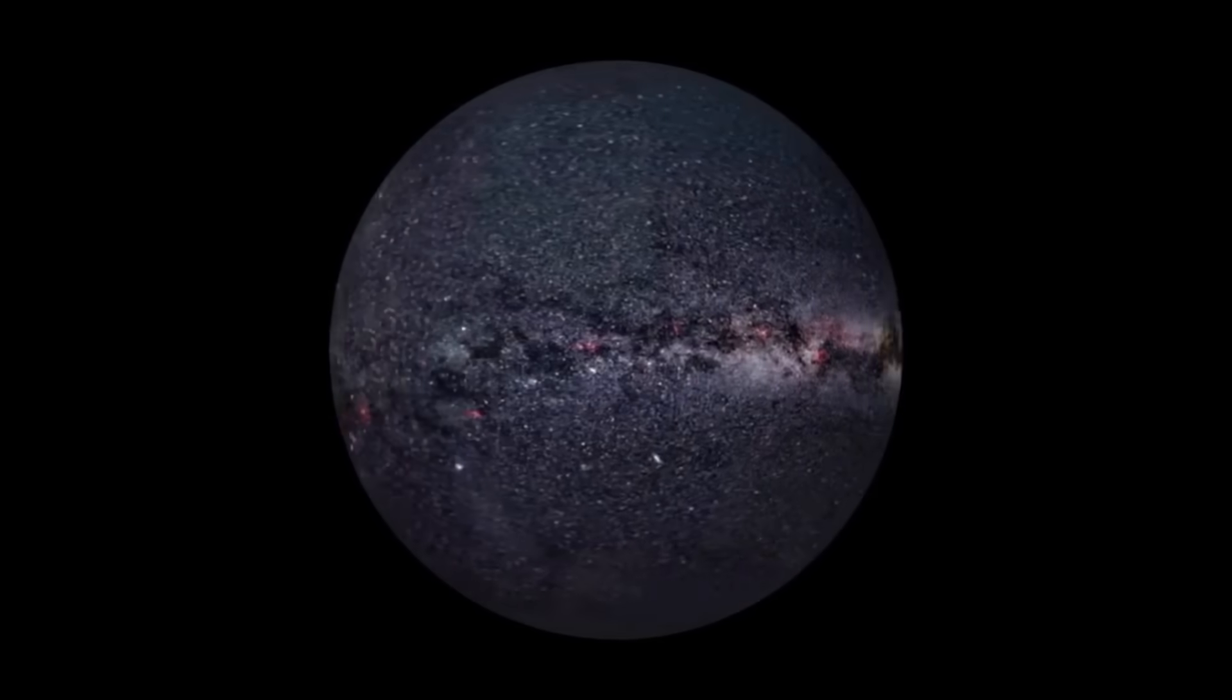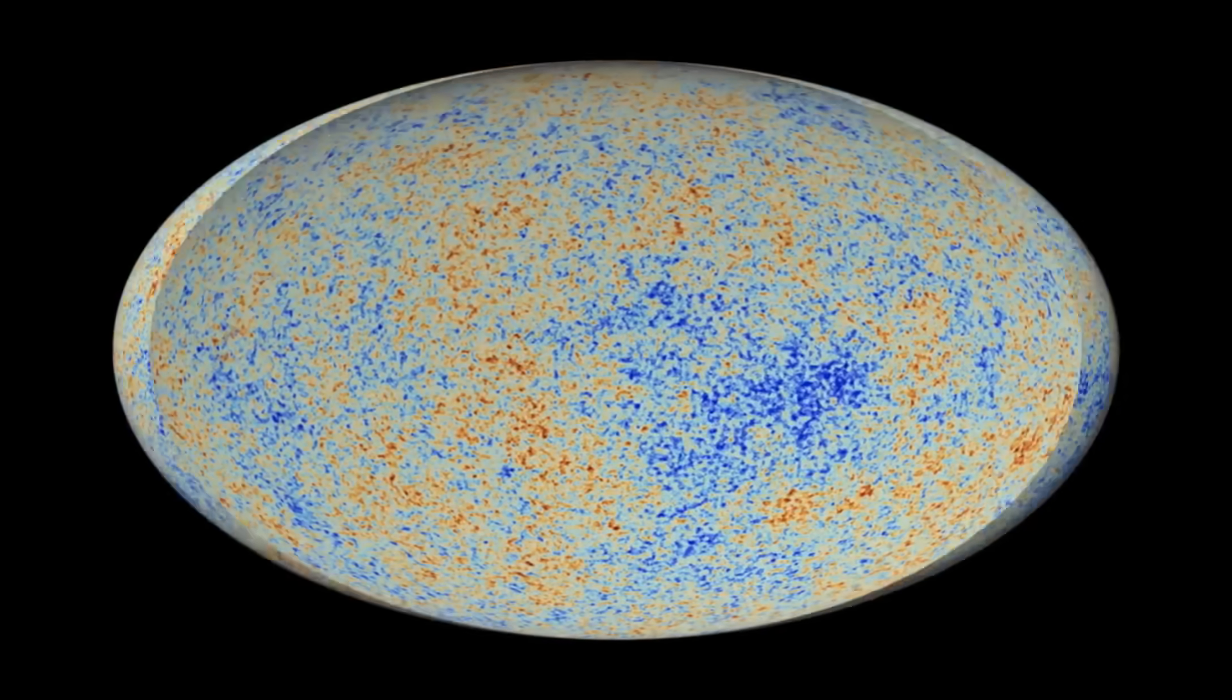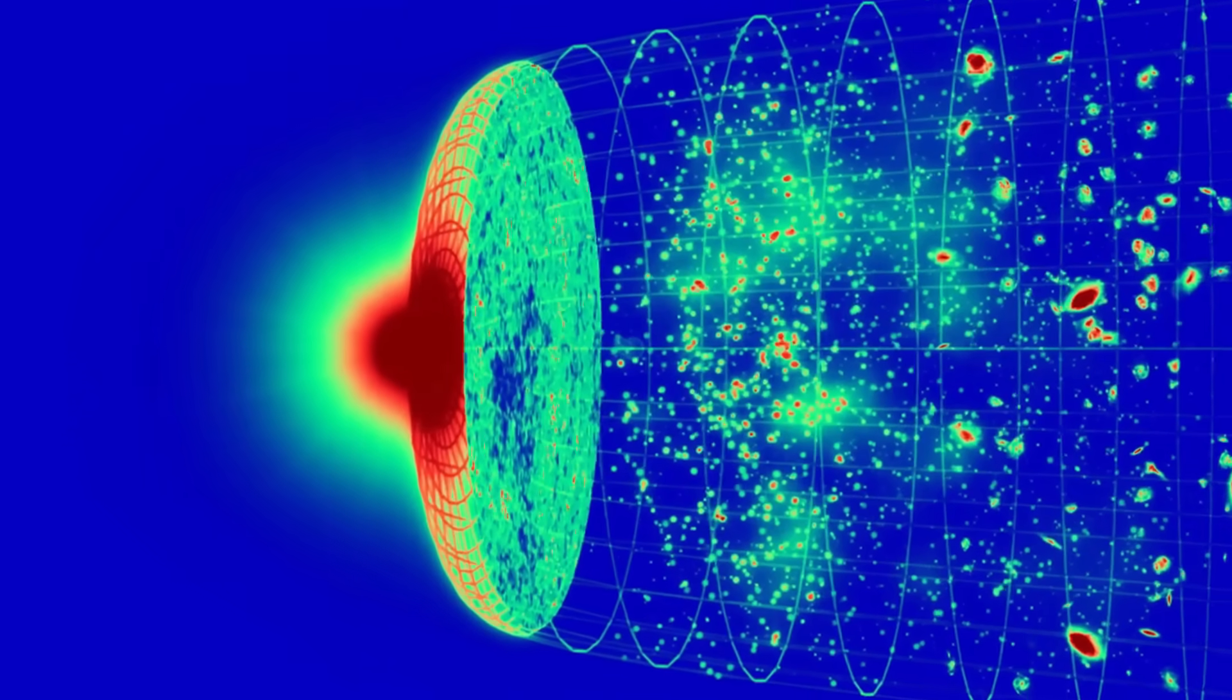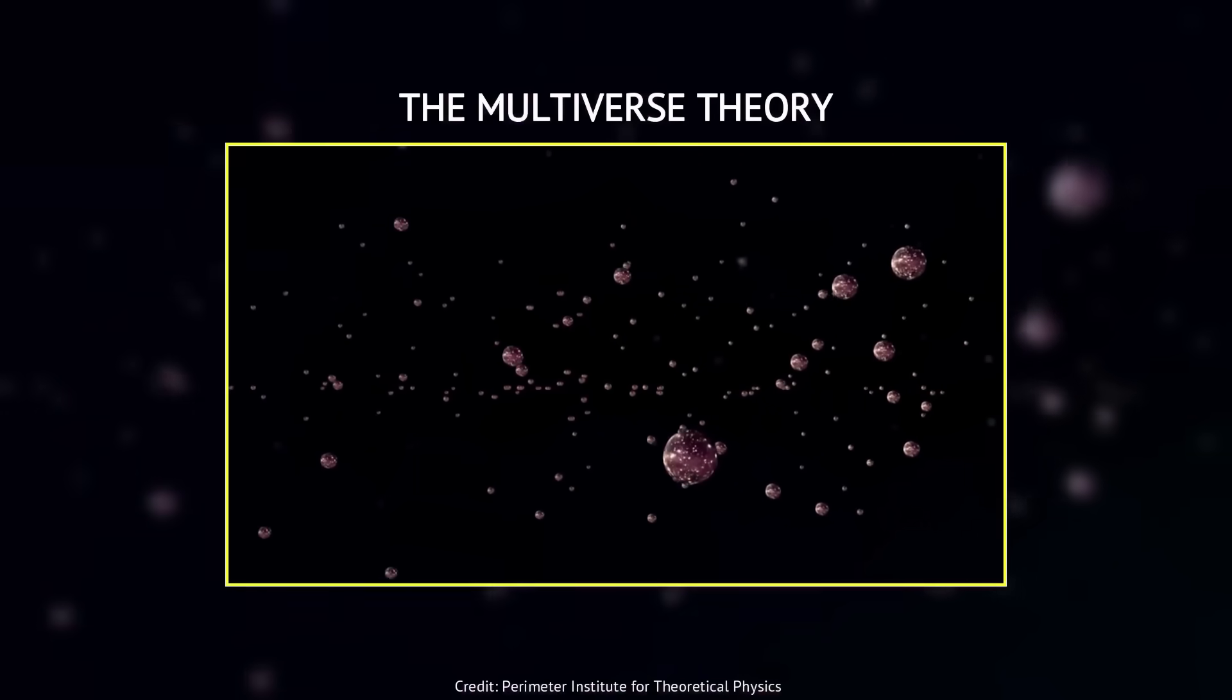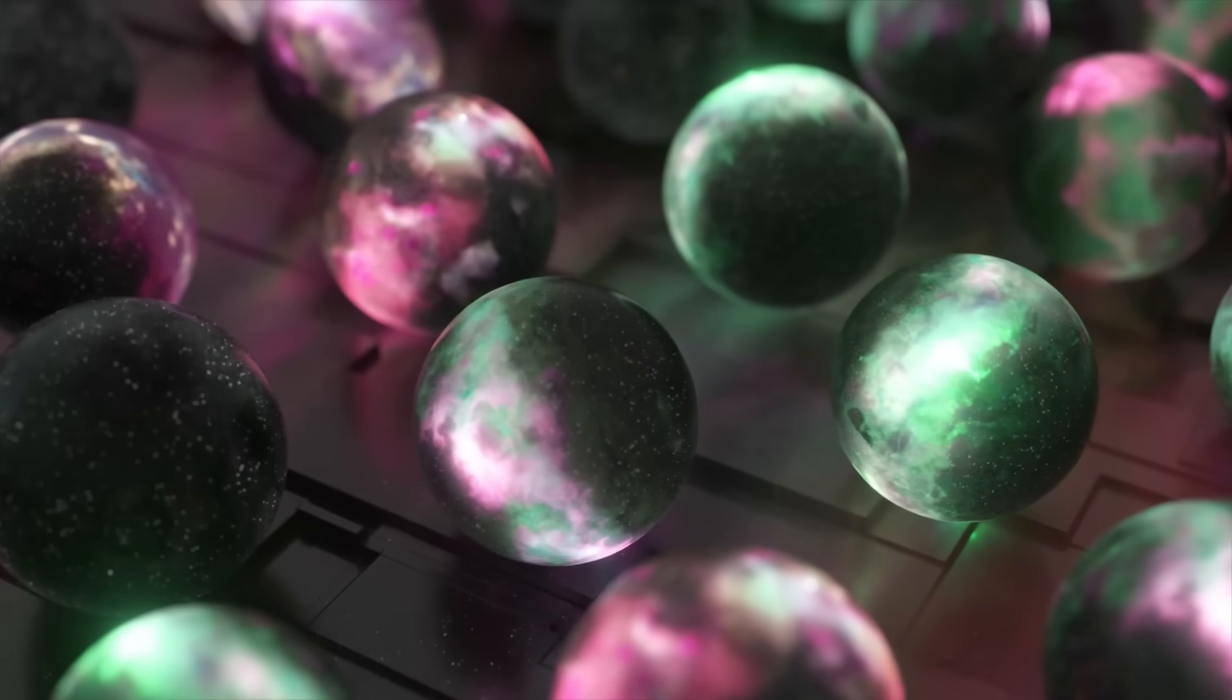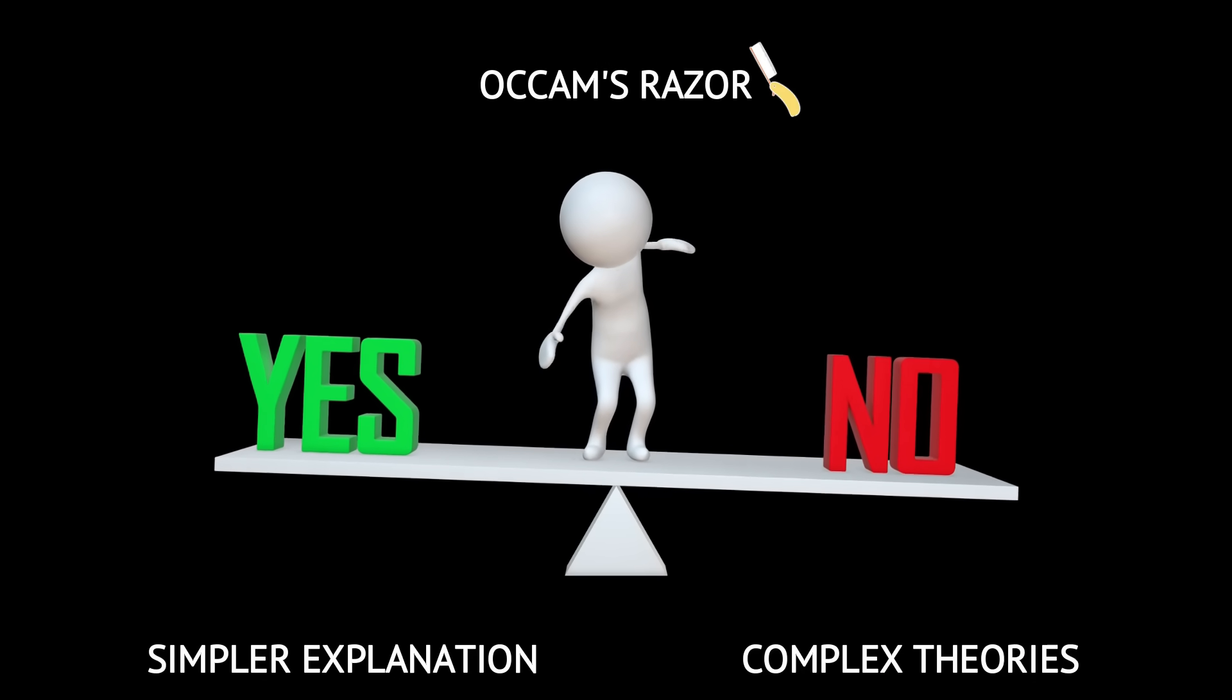While the inflation theory does explain some issues, like why the universe looks so uniform on a large scale, it also introduces new challenges like, what energy field actually powered inflation? Inflation requires the universe to have very specific initial conditions. But why were these conditions present to begin with? Some inflation models suggest infinite bubble universes. This raises philosophical and scientific questions about testability and the nature of physical reality. So ignoring the Occam factor here would be basically assuming that there are no simpler explanations.